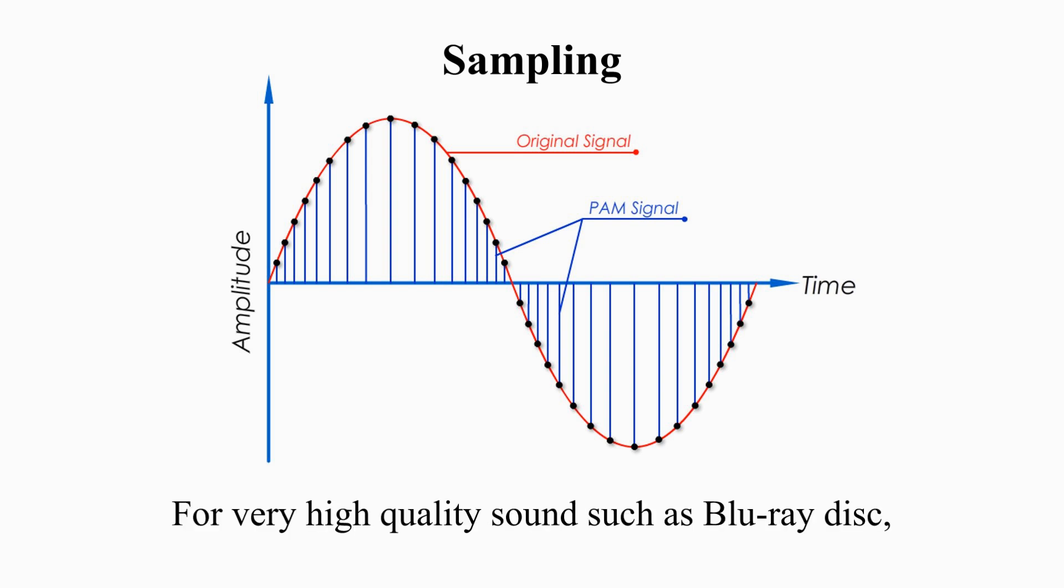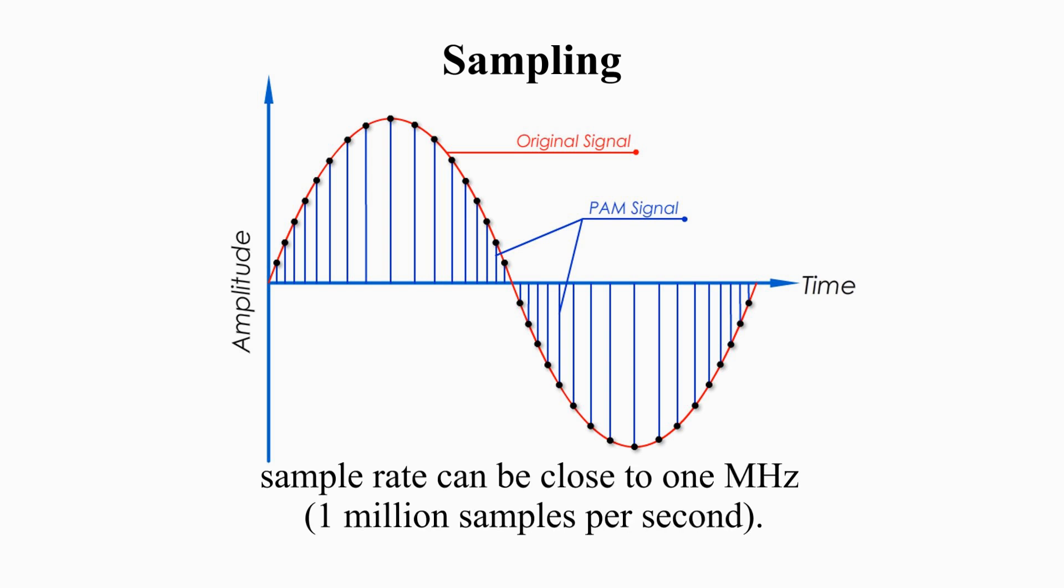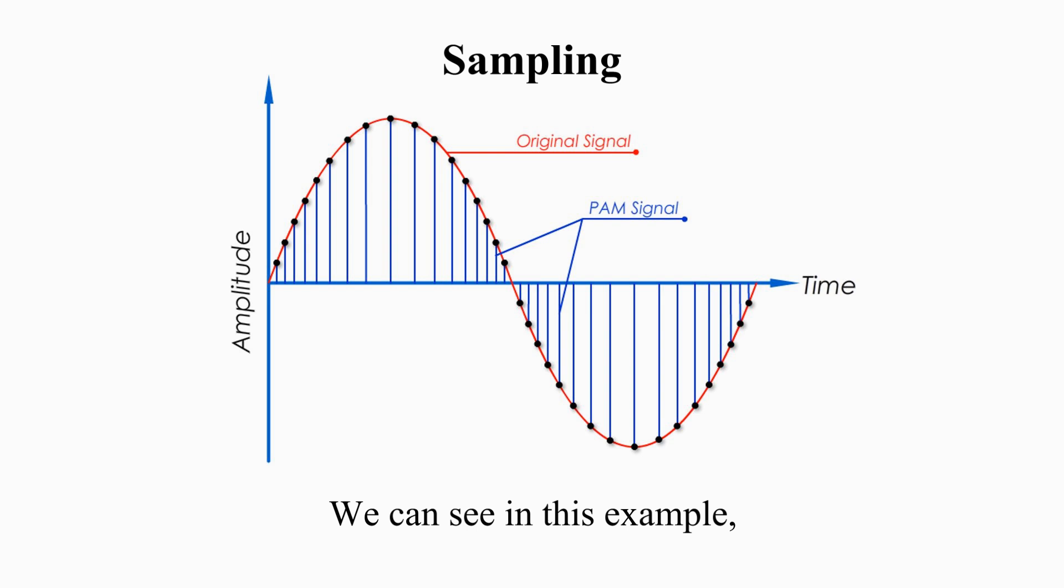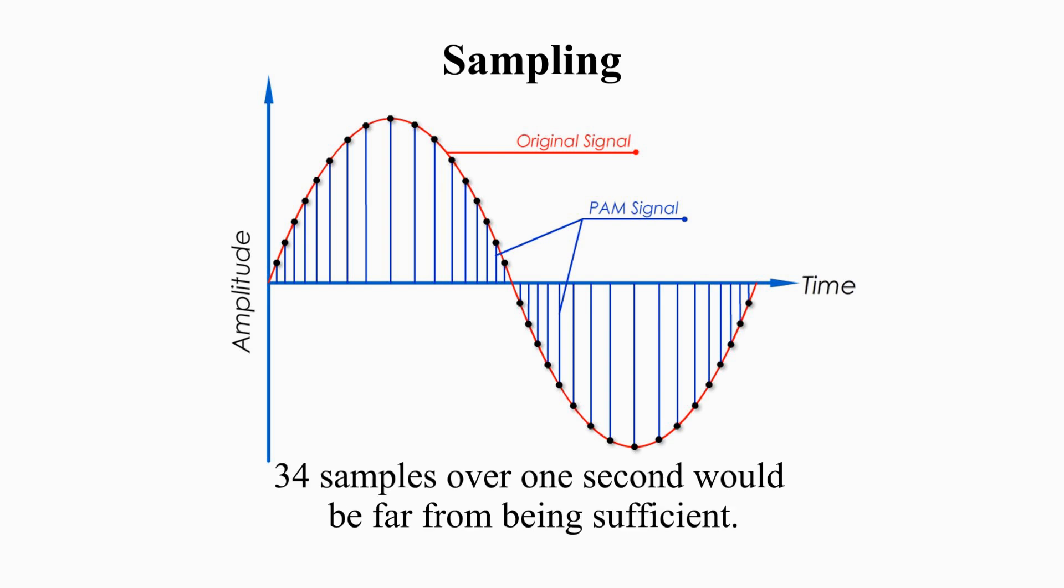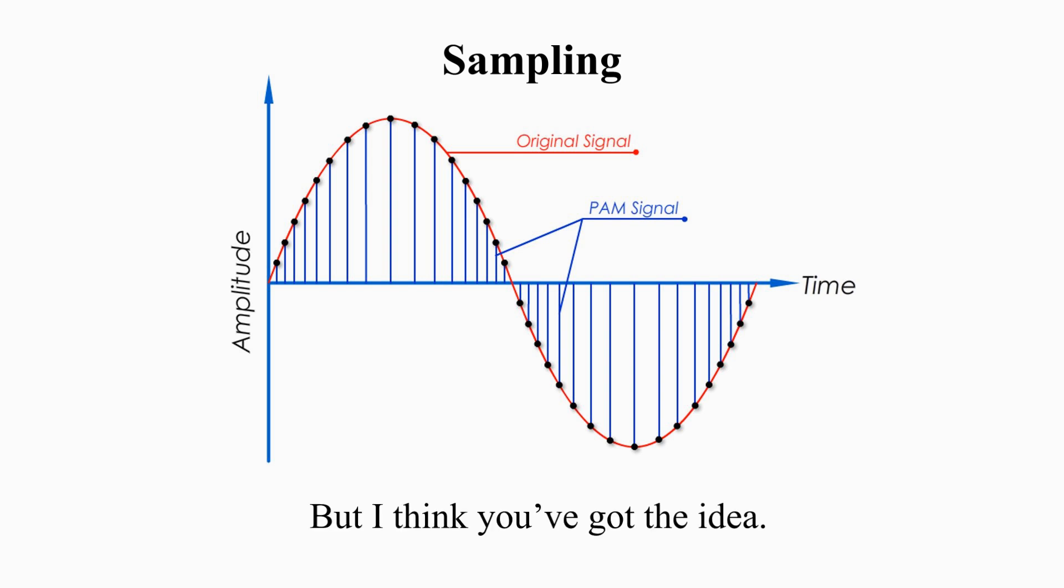For very high-quality sound, such as Blu-ray disk, sample rate can be close to 1 MHz, or 1 million samples per second. We can see in this example, 34 samples over 1 second would be far from being sufficient, but I think you got the idea.